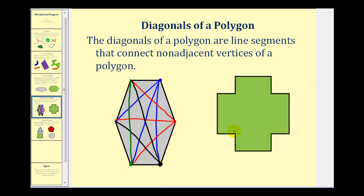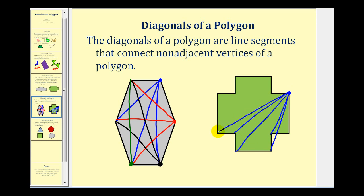For this polygon, let's sketch the diagonals from one of the vertices. Selecting this vertex here, the adjacent vertices are this vertex and this vertex. The diagonals would be the segments to the remaining vertices — here, here, here, and so on. Some of these are hard to see because they overlap. Notice that some of the diagonals pass outside the polygon, whereas in our first example all the diagonals were inside the polygon.